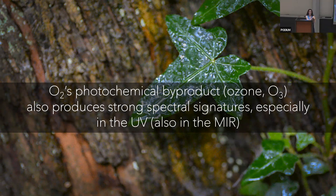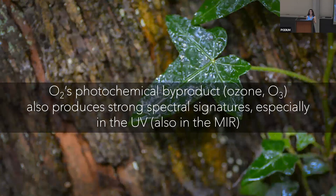Oxygen produces strong spectral signatures because it is so abundant in our atmosphere. It also has a photochemical byproduct, O3, or ozone. Ozone has even stronger spectral signatures than oxygen — you can actually detect ozone at concentrations much smaller than those required to detect oxygen itself. So ozone is a really useful and sensitive proxy for detecting super low abundances of oxygen.